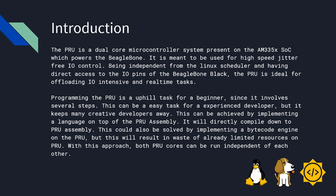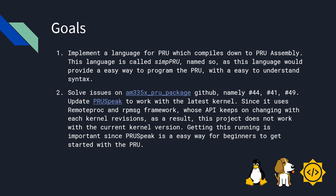The goals for this project are as follows. Implement a language for PRU which compiles down to PRU assembly — this language is called SimPRU, named so as this language would provide an easy way to program the PRU with an easy-to-understand syntax. Solve issues in the AM335 PRU package, namely issues 44, 41, and 49. Update PRU speaks to work with the latest kernel, since it uses remote proc and RP message framework whose API keeps changing with each kernel revision, and as a result this project does not work with the current kernel version. Getting this running is important since PRU speaks is an easy way for beginners to get started with the PRU.